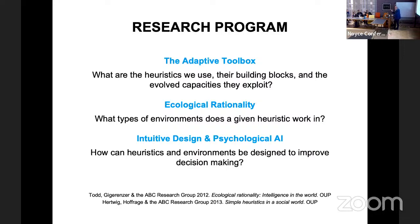Here is the research program my group has been following, and it has three questions. The first is descriptive: what is in the adaptive toolbox of an individual, organization, or species? What are the heuristics they use, the cognitive capacities that the heuristics exploit, and what are the building blocks? The goal is to develop algorithmic models of these heuristics — not labels. Since the 1970s, the heuristics-and-biases program has used labels like availability and representativeness; nobody knows exactly what they mean, and they're used to explain things after the fact, never to make predictions. The same is true of system one and system two — just a list of dichotomies.